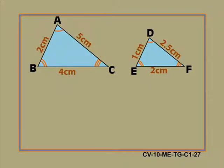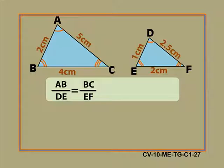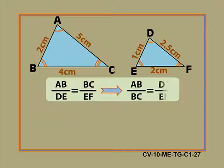Now let us have some measurements. We have AB by DE is equal to BC by EF. This can also be written as AB by BC is equal to DE by EF.